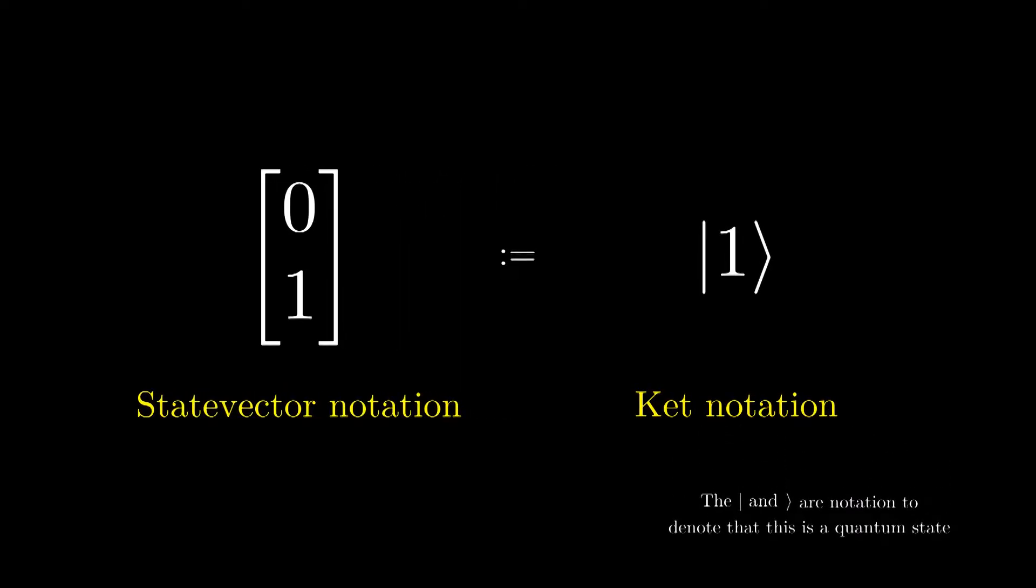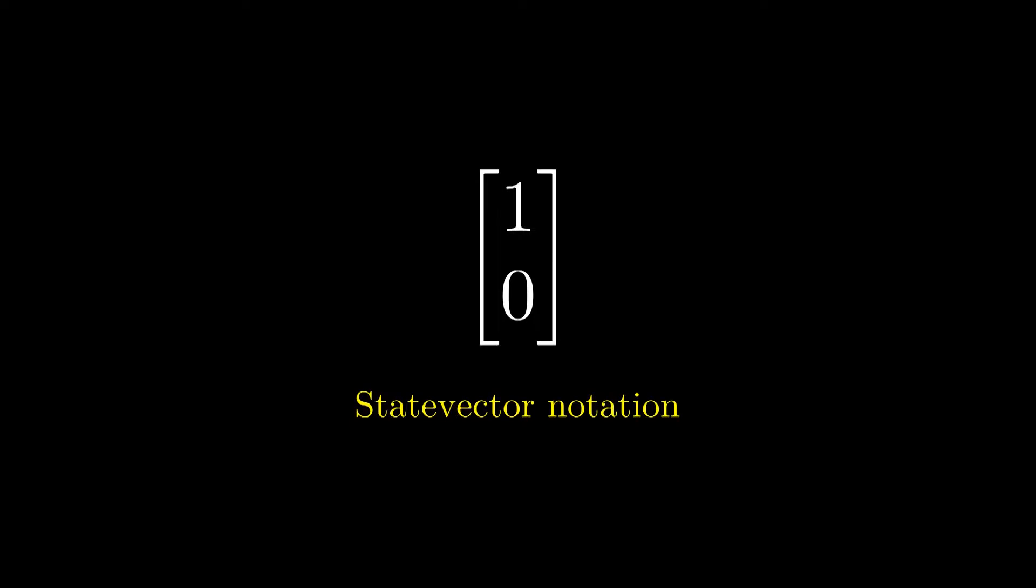Instead of being integers 1 and 0, quantum bits are two-dimensional vectors. For example, this is one of them, which is the qubit equivalent of classical 1. And similarly, there is a qubit equivalent of classical 0.